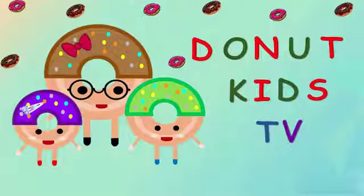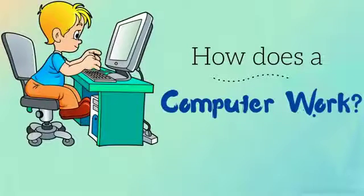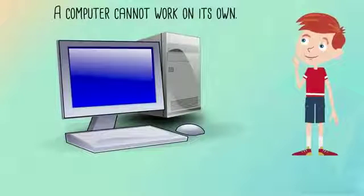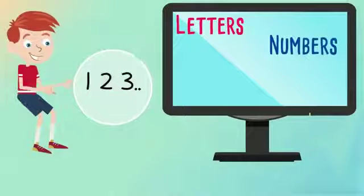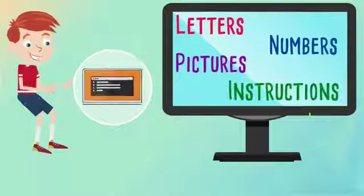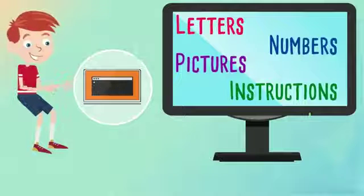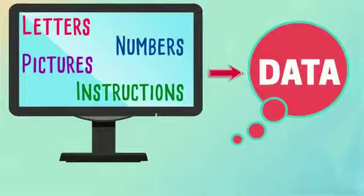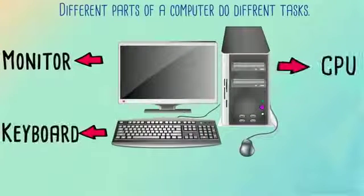Doughnut Kids TV: How does a computer work? A computer cannot work on its own. We need to enter letters, numbers, pictures and instructions into the computer to make it work. These are called data. Different parts of a computer do different tasks.